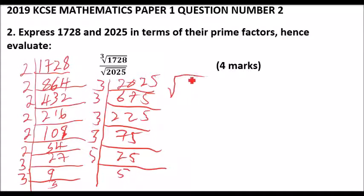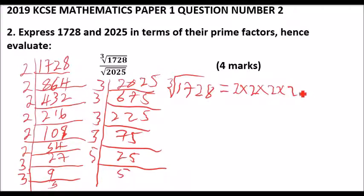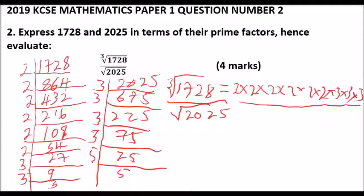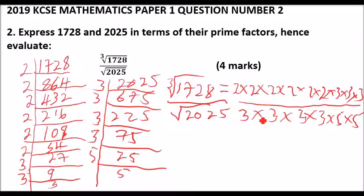Now we write 1728 in terms of its prime factors under the cube root: 2 × 2 × 2 × 2 × 2 × 2 × 3 × 3 × 3. Then we write 2025 under the square root as: 3 × 3 × 3 × 3 × 3 × 5 × 5.